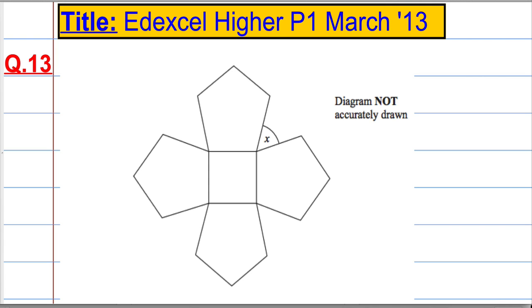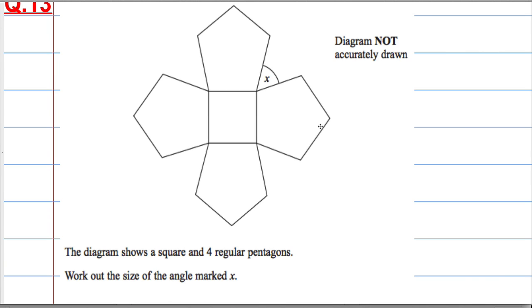Okay, so Question 13. We've got a diagram here. As always, diagram's not drawn accurately. It shows a square and four regular pentagons. Regular is an important word here - it means that all the angles inside the shape are the same and all the sides are the same length.